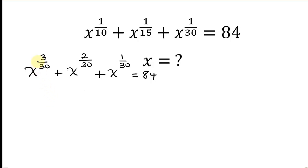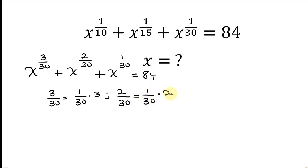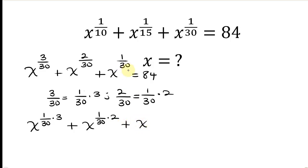Our next step will be to separate these exponents. For 3 over 30, that is the same as 1 over 30 times 3, and for 2 over 30, that is the same as 1 over 30 times 2. So the expression is written as x to the 1 over 30 times 3, plus x to the 1 over 30 times 2, plus x to the 1 over 30, equal to 84.